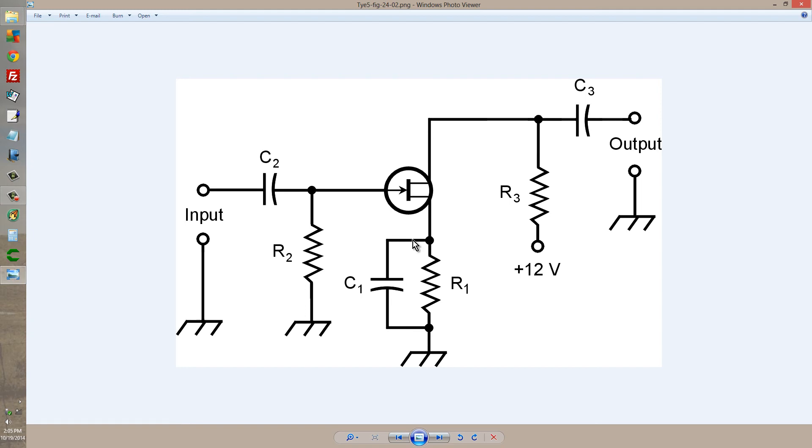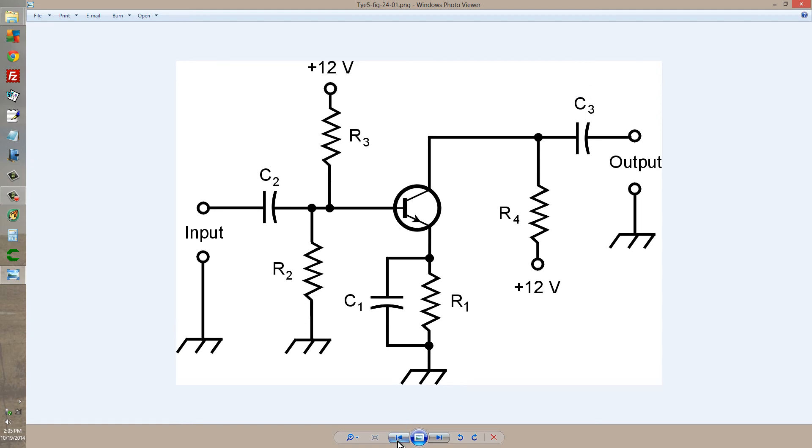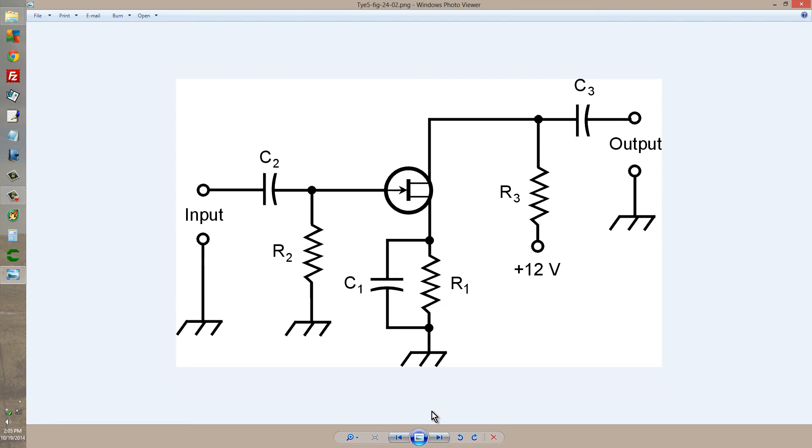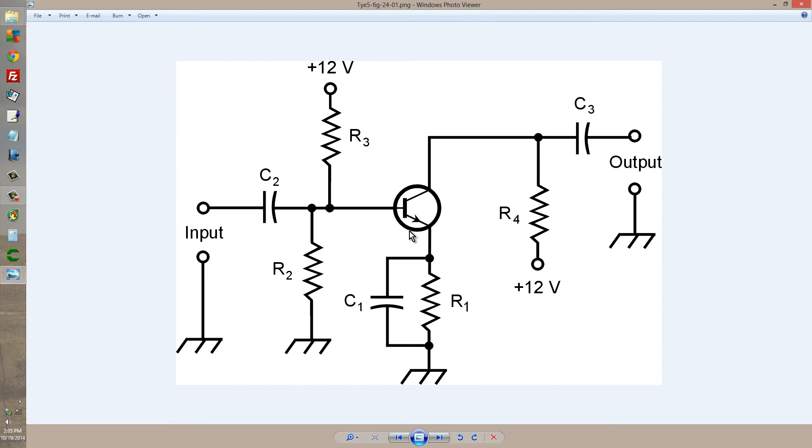you can get a better signal to noise ratio than you can do with the bipolar device, because the field effect transistor inherently generates less internal noise. So that is the summary of the equivalent weak signal amplifiers for NPN bipolar and N-channel junction field effect transistors.